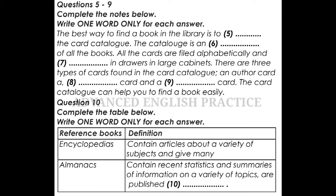In the card catalogue, each book has three cards: an author card, a title card, and a subject card. The author card is alphabetised under the author's name. The title card is filed alphabetically according to the title of the book. The subject card is filed alphabetically under the name of the subject. In many university libraries, they use their own cataloguing system or the microfiche system.